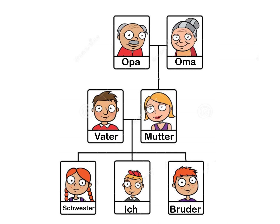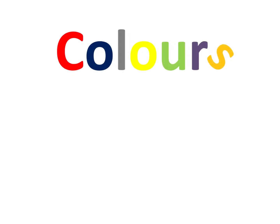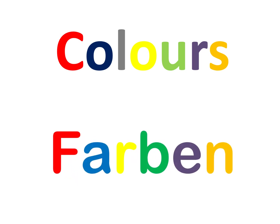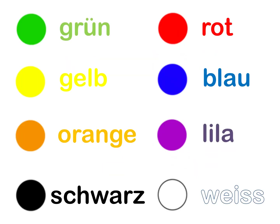Then we learned our colors — or, in German, Farben. The German word for colors is Farben. Let's have a look at some of the Farben we learned — these eight to begin with. Obviously you know what those are in English, but let's review them in German. This is lots of review.